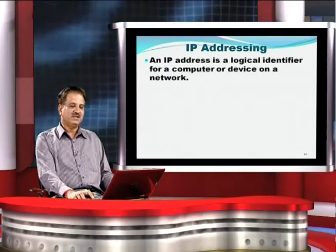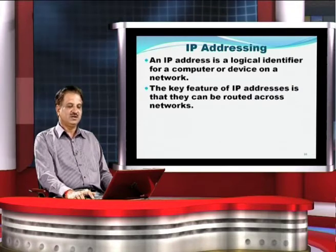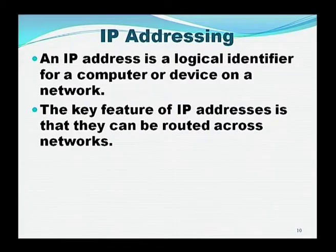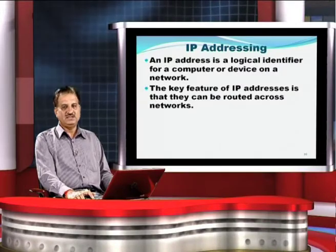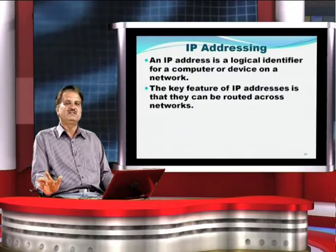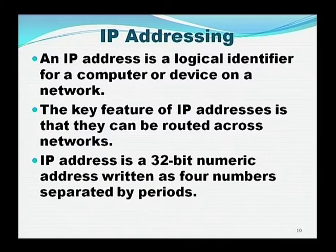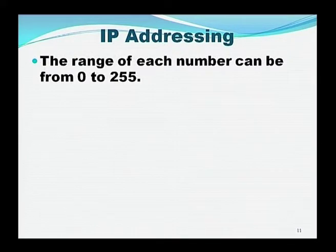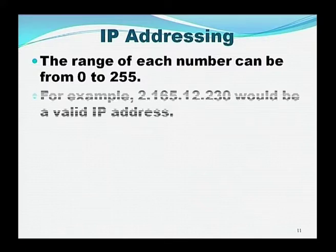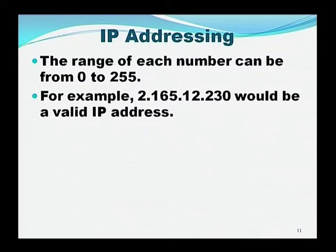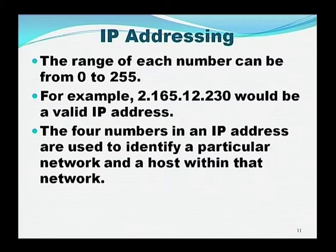There is a mechanism as far as IP addressing is concerned. An IP address is a logical identifier for a computer or device on the network. A key feature of IP addresses is that they can route across the network — we simply transmit the packet and wherever a path is available, it will move across it. An IP address is a 32-bit numeric address written as 4 numbers separated by periods, where each segment may range from 0 to 255. Each host is assigned a unique number.